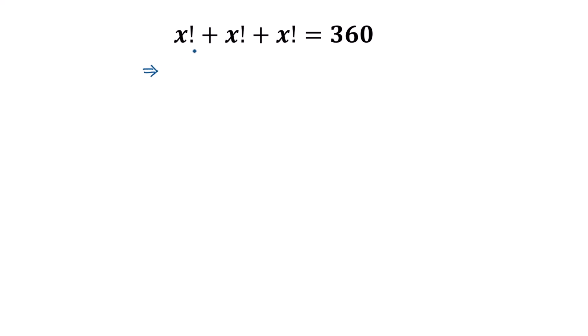Taking common x factorial from the left side, we will get x factorial times (x factorial divided by x factorial will be one, so here it will remain one, plus similarly taking common x factorial from here it will be one, plus taking common x factorial the last part will be one) is equal to the right side.